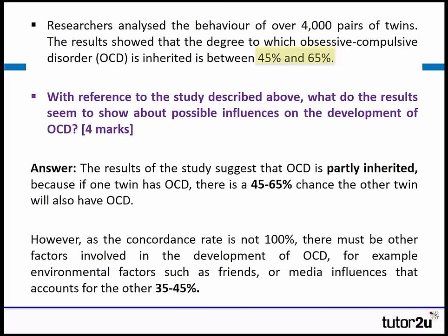At this stage we've only got two marks — we're not saying where the rest of OCD comes from. So we need to say: however, as the concordance rate — a key word, meaning the percentage rate in twins — is not 100%, there must be other factors involved in the development of OCD. For example, it could be environmental factors such as different friends or media influences that account for this other 35 to 45%.